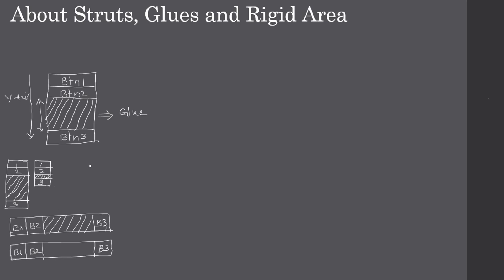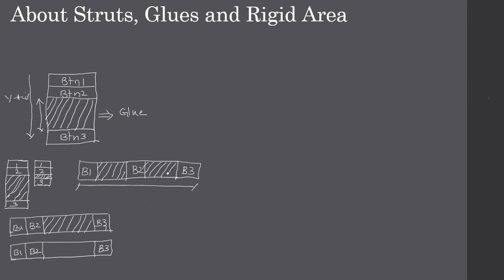This is the use of glue. Let's see one more example. If you see here, button one, button two, and button three are all equally spaced — we can use glue for this purpose also. In this case we are adding glue between button one and button two as well as between button two and button three. What happens is button one, button two, and button three will look equally spaced regardless of the size.